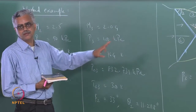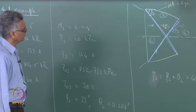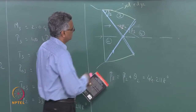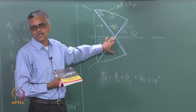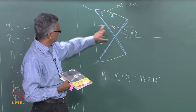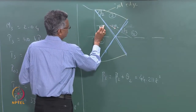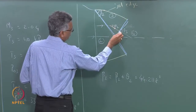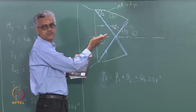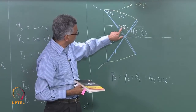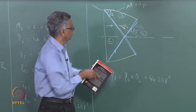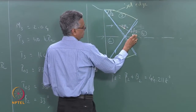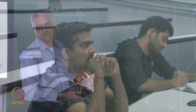A student asks how beta3 is known. The instructor explains: beta3 is the wave angle for this shock, measured with respect to the velocity vector in region 3. Since this velocity vector is inclined at theta2 from the original direction, and beta2 is measured from the original, beta3 = beta2 + theta2. The shock intersection is idealized: we assume the shock goes through without changes within the framework of oblique shock theory.